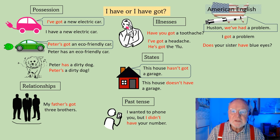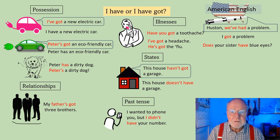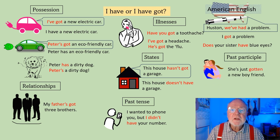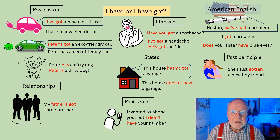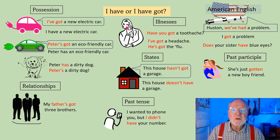Americans would ask the question in a slightly different way. I would say has your sister got blue eyes? But in American English it's does your sister have blue eyes? Slight difference in the way we use these two words. And Americans use a different past participle — she's just gotten a new boyfriend. We use got in English. In older English we used to use gotten, but when the language crossed the Atlantic it changed. The Americans keep gotten and we use got.